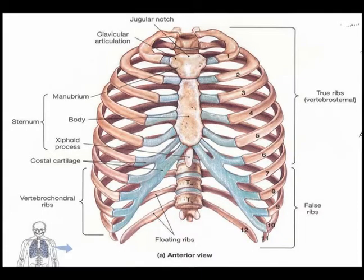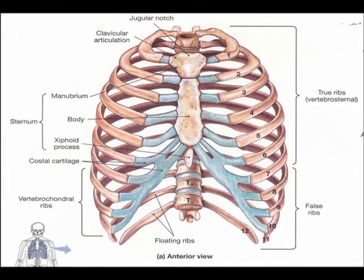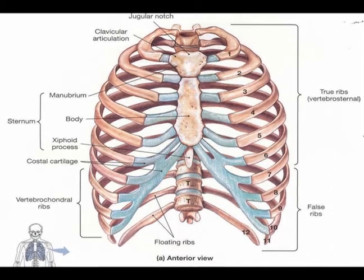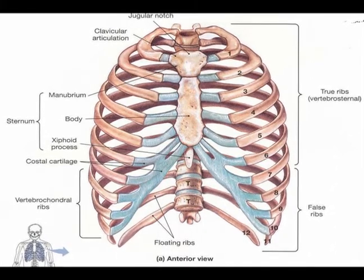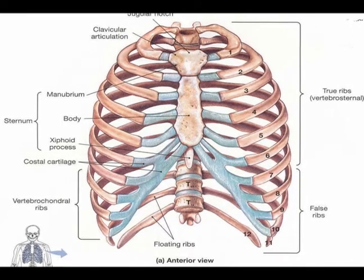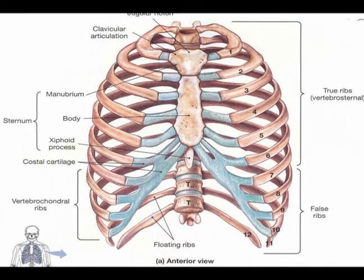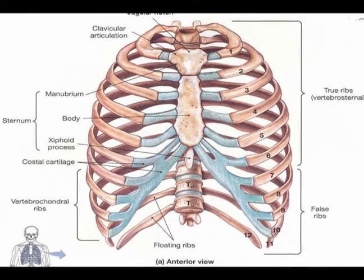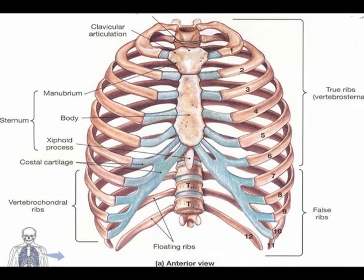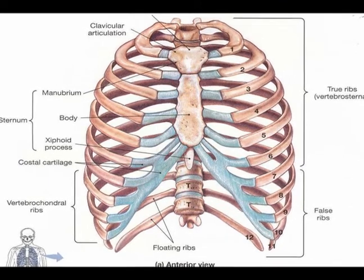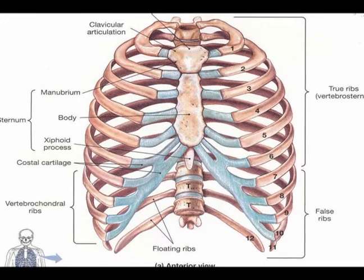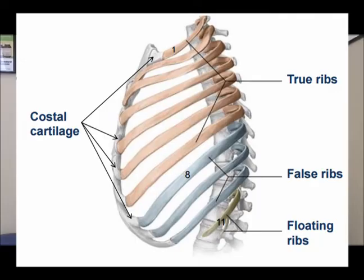The true ribs are also known as the vertebral sternal ribs. These are ribs number one through seven on each side — the first seven pairs of ribs. They are the vertebral sternal ribs; that is the medical term for the true ribs. Remember that: the vertebral sternal ribs.